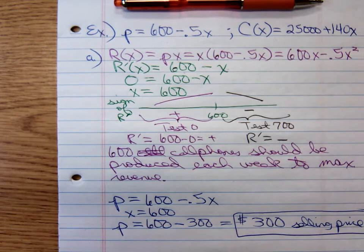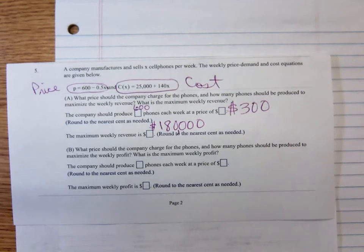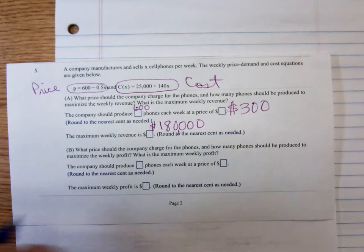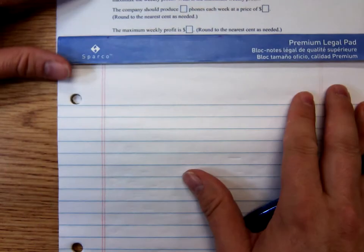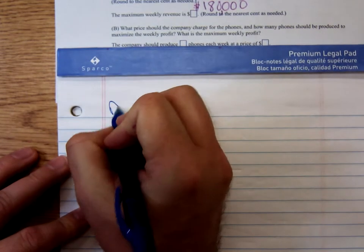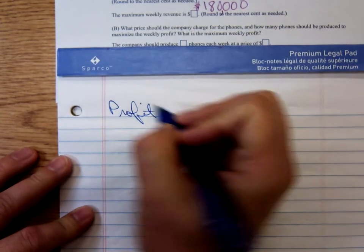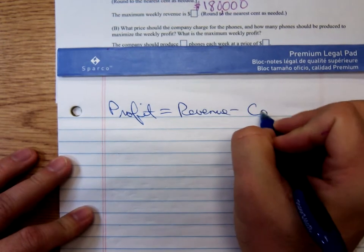That would occur when they sell 600 cell phones, setting the price at $300 each. And now let's go on to the second part. The profit part. We want to maximize profit. Remember, we know that profit is equal to revenue minus cost. So profit equals revenue minus cost.